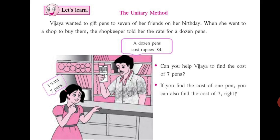Yes, if you find the cost of 1 pen, you can also find the cost of 7. So, as the shopkeeper has said, a dozen pens cost Rs. 84, meaning 12 pens cost Rs. 84. So 1 pen will cost Rs. 84 divided by 12. Since 12 sevens are 84, you will get the cost of 1 pen — that is Rs. 7. After dividing, to find the cost for 7 pens, you multiply again by 7. So 7 sevens are 49.